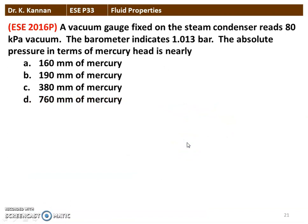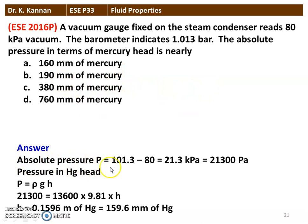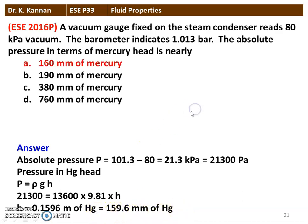The next question is from the 2016 question paper. A vacuum gauge fixed on a steam condenser reads 80 kPa vacuum; the barometer indicates 1.013 bar. The absolute pressure in terms of mercury head is nearly — we have 4 options. Absolute pressure = 101.3 kPa − 80 kPa = 21.3 kPa = 21,300 Pa. Converting to mercury column: 21,300 = 13600 × 9.81 × H, so H = 0.1596 m = 159.6 mm of mercury. The correct answer is option A: 160 mm of mercury.